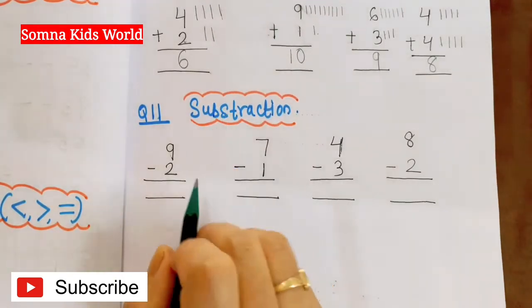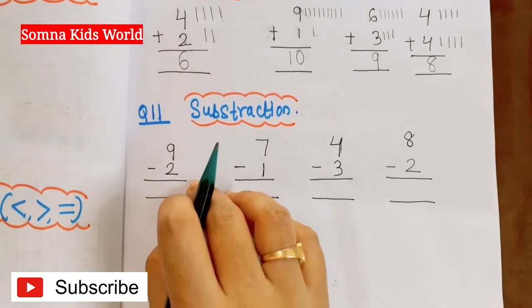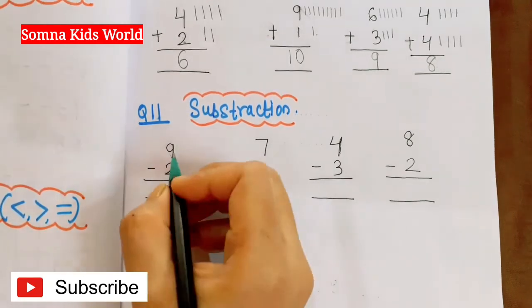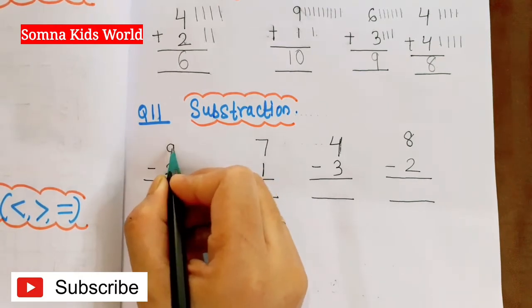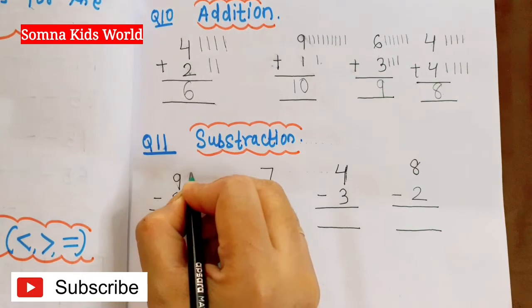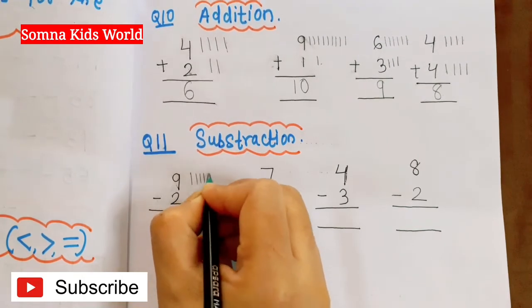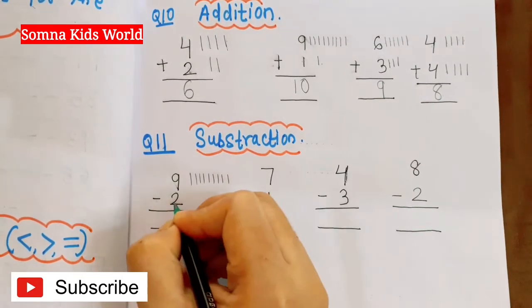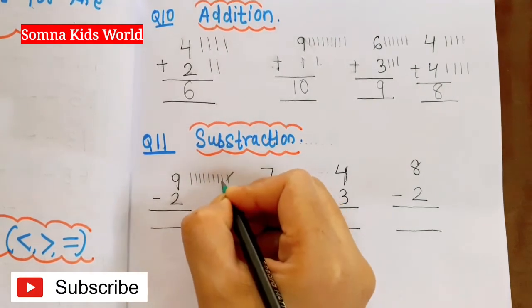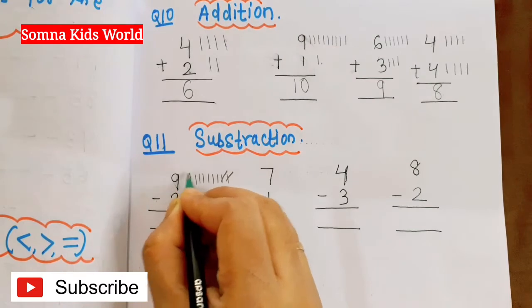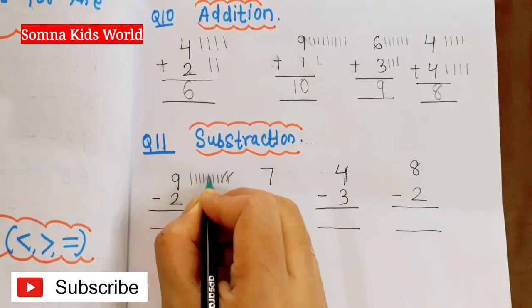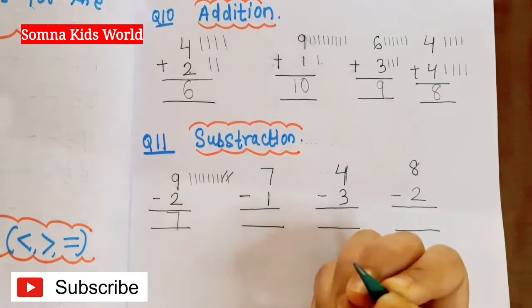Next question is subtraction. Subtraction means to take away or deduct. For 9 minus 2, draw 9 sticks, then cross out 2 sticks. Count what's left: 1, 2, 3, 4, 5, 6, 7 — answer is 7. For 7 minus 1, draw 7 sticks and cross out 1. Count remaining: 1, 2, 3, 4, 5, 6 — answer is 6.